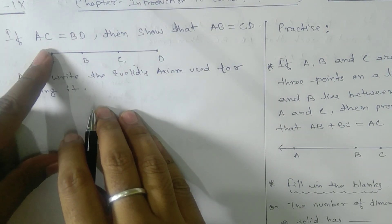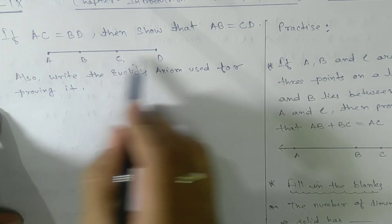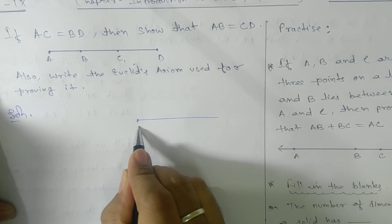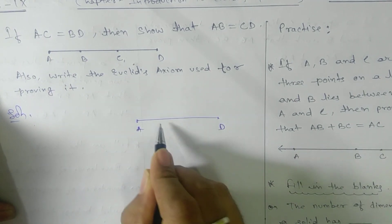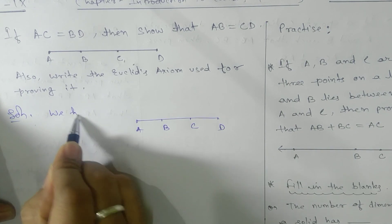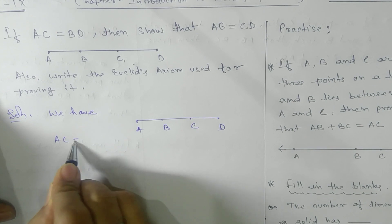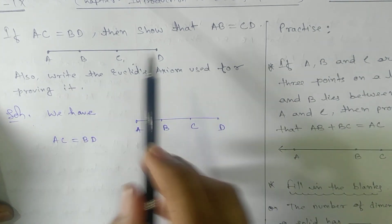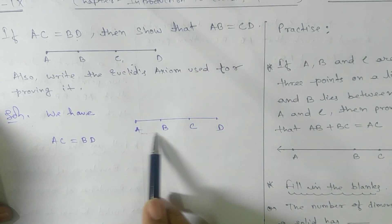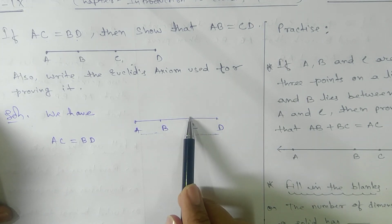Here the question is: if AC equals BD. First, our target is to draw the diagram they have given — points A, B, C, D on a line. Now, we have AC equals BD, and what they are asking is that if AC equals BD, then show that AB equals CD.